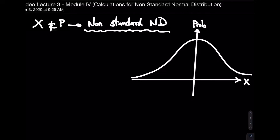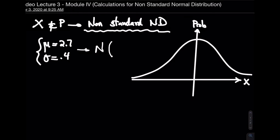Let's take an example dealing with average GPA: the mean is 2.7 and the standard deviation is 0.4 — these two values must be provided. The notation you'll see is N(2.7, 0.4), which represents a non-standard normal distribution with a mean of 2.7 and a standard deviation of 0.4.